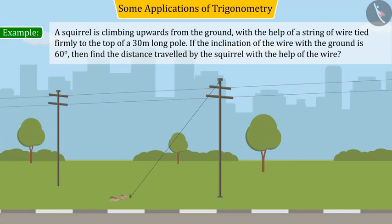A squirrel is climbing upwards from the ground with the help of a string of wire tied firmly to the top of a 30-meter long pole. If the inclination of the wire with the ground is 60 degrees, then find the distance traveled by the squirrel with the help of the wire.